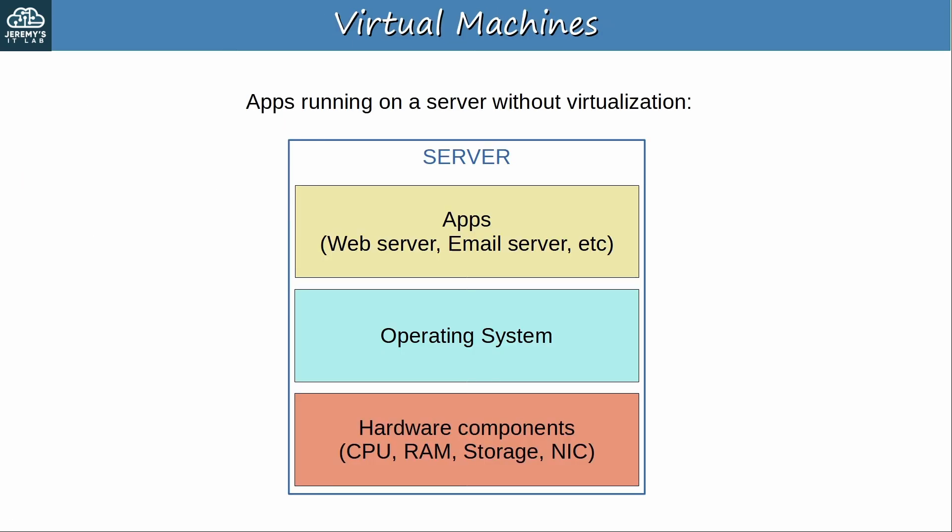Here's an example of apps running on a server without virtualization. There is a single operating system — for example Windows Server or Red Hat Linux — and on top of that OS all of the apps are running. The apps are not isolated. A problem in one app could affect all of the other apps. You could isolate them by buying a separate physical server for each individual app, but that is extremely cost inefficient.